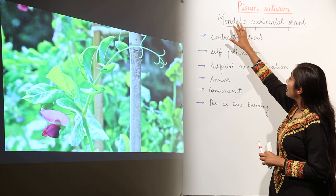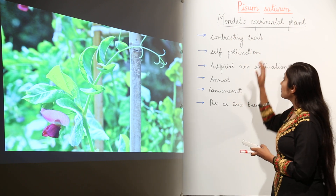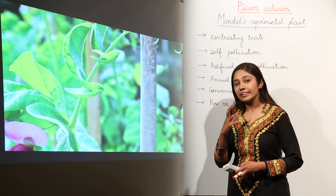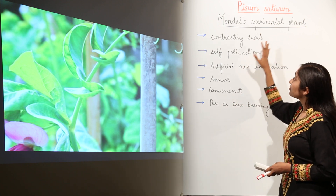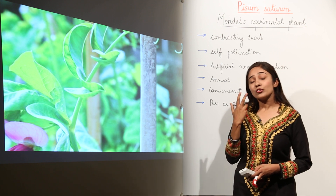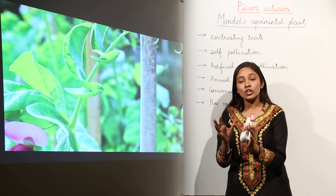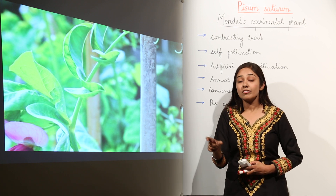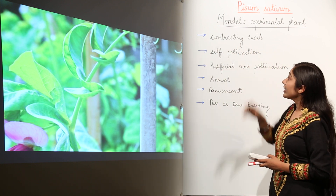Mendel's experimental plant was Pisum sativum, and this plant was chosen by Mendel based on certain advantages. So, why did Mendel choose the pea plant? First of all, it had contrasting traits. Contrasting traits are two opposing traits in which one is dominant and the other is recessive — that pair is known as a contrasting trait.